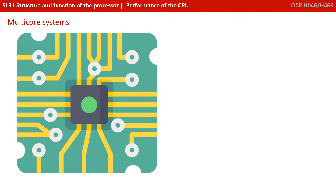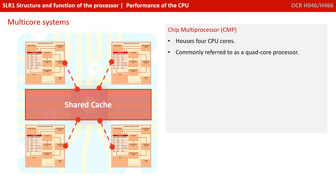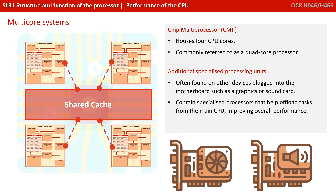Many people look at a physical single chip plugged into their motherboard and call this a CPU. While that understanding is perfectly fine for exams, if it contains more than one core, this is actually technically incorrect. What we actually have is a chip multiprocessor — containing, for example, four CPU cores and some shared cache. We commonly just refer to this as a quad core processor, but it is actually multiple CPU cores embedded into a single physical chip, known as a chip multiprocessor.